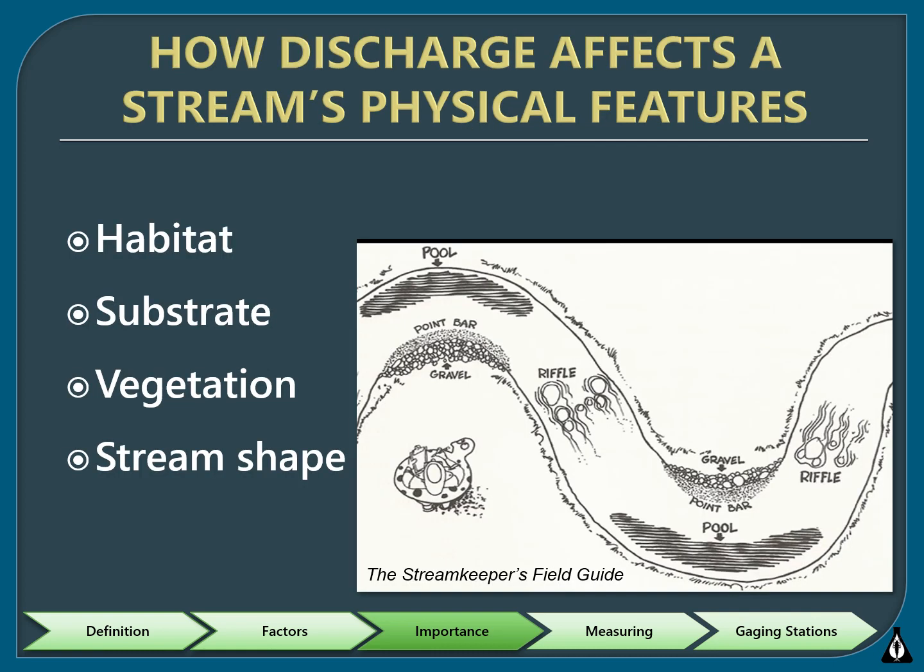Stream flow has a big role in determining a stream's physical features. The movement of water and material changes the shape of the stream channel, the size of the substrate in the stream bed, and the type of riparian vegetation that can grow in and near the stream. As water moves substrate in the stream bed, erodes stream banks, and deposits material downstream, it shapes the stream channel. Variability in discharge also influences the migration of the stream channel over time.